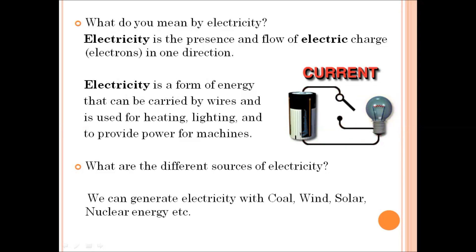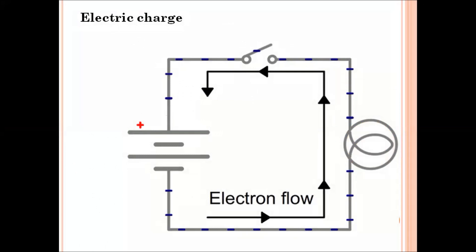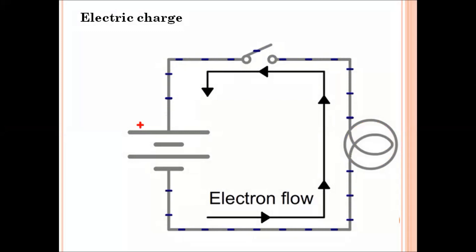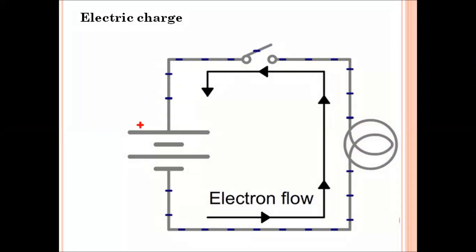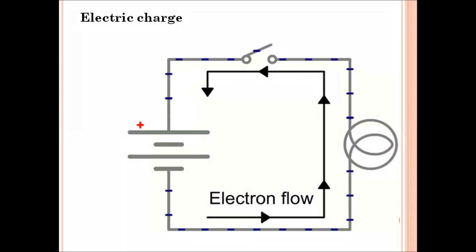The next question that comes to mind is: what are the different sources of electricity? We can generate electricity with coal, wind, solar, nuclear energy, etc. In the given slide, we can see that when a circuit is closed, the electrons start moving. This moving electron is called electric charge and is responsible for the glowing of a bulb.